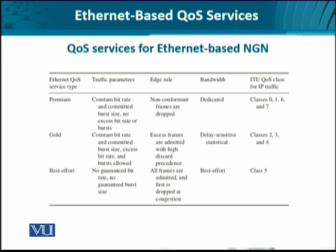The premium service has constant bitrate with a committed burst size — a burst being a sudden upsurge of traffic which is a deviation from a constant bitrate. If this burst size is agreed to, it is a committed burst size. No excess bitrate or bursts are granted in the case of premium service. The edge rules are very stringent here: any Ethernet flow not conforming to the CBR guidelines or committed burst size guidelines shall be straight away dropped. The bandwidth in premium is therefore pretty dedicated. The QoS classes for IP traffic by ITU can be class 0, 1, 6, and 7.